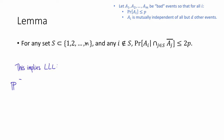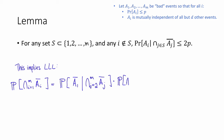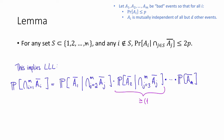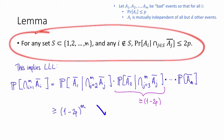Indeed, the probability that none of the ai occur equals the probability that a1 does not occur conditioned on aj not occurring for all j from 2 to m, times the probability that a2 does not occur conditioned on none of the aj occurring from j equals 3 to m, and so on, all the way up to the probability that am does not occur. The lemma implies that each one of these terms is at least 1 minus 2p. Thus this whole thing is at least (1 minus 2p) to the m, which was the statement of the Lovász Local Lemma. So if we can prove this lemma, it implies the Lovász Local Lemma.